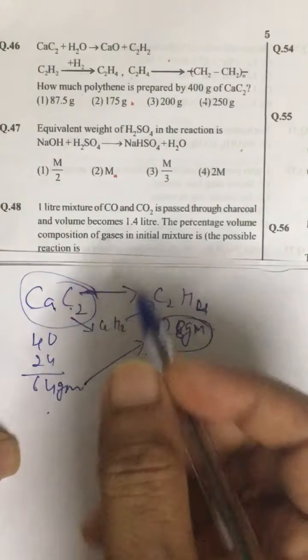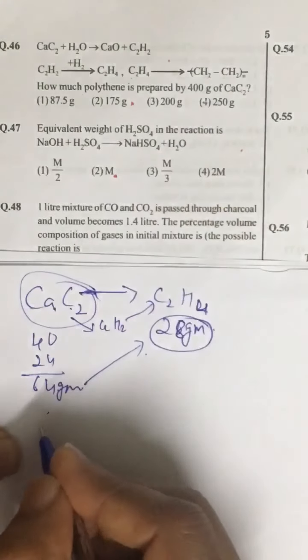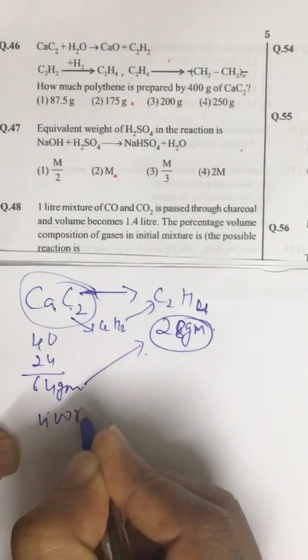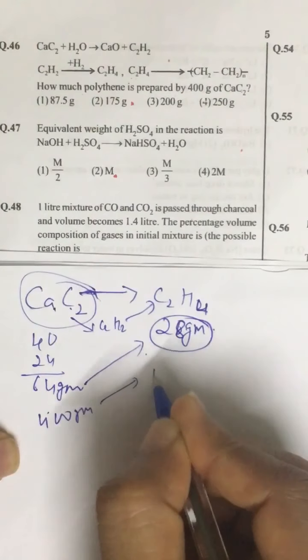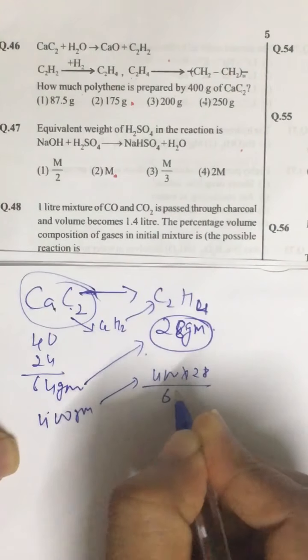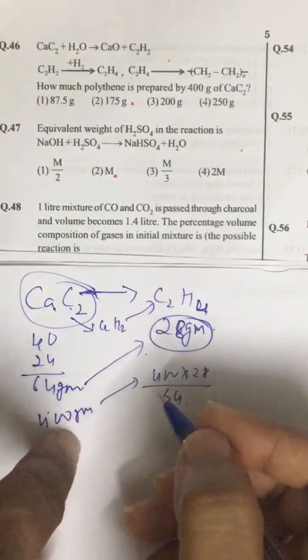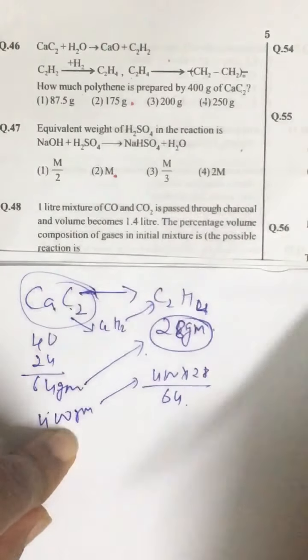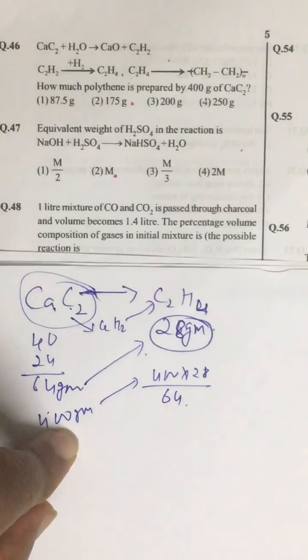We are given 400 grams of calcium carbide. So 400 grams will produce this is 400 into 28 divided by 64. That is it. If you calculate, you get 175 grams. Second answer.